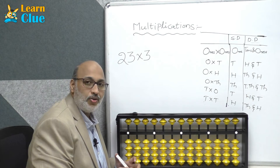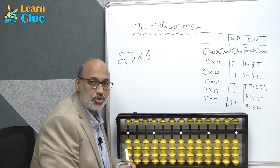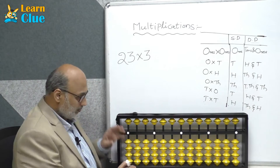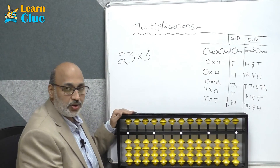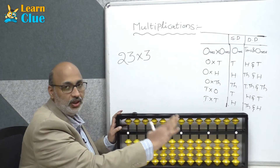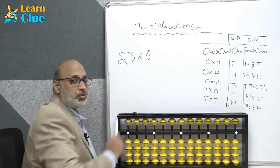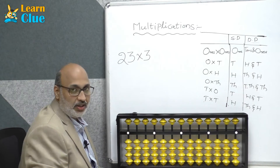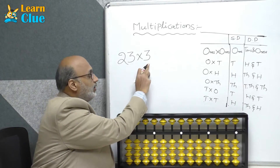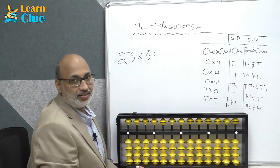Hi students, now we are going to have some multiplication problems of double digit into single digit. We will see a simple problem. Before that, for all these problems, first we have to place this on an abacus and then we will identify the solution. For example, if we take the problem 23 into 3, 23 is the multiplicand, 3 is the multiplier, and the result we call the product.